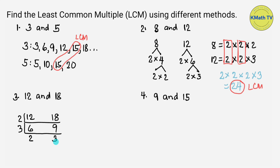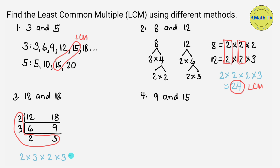To find the LCM, we will multiply the prime divisors and the last quotients: 2 times 3 times 2 times 3. Multiplying: 2 times 3 equals 6, 6 times 2 equals 12, and 12 times 3 equals 36. The LCM of 12 and 18 is 36.